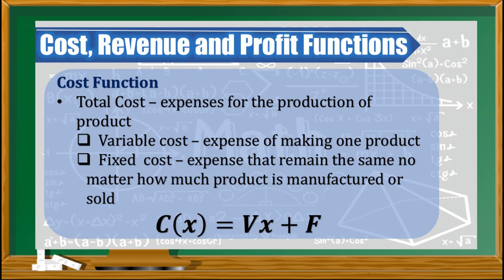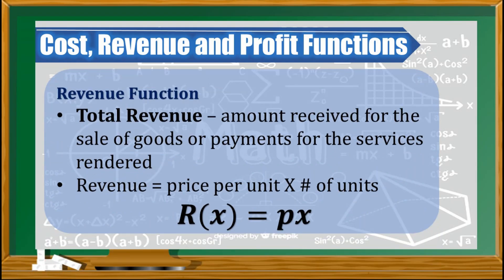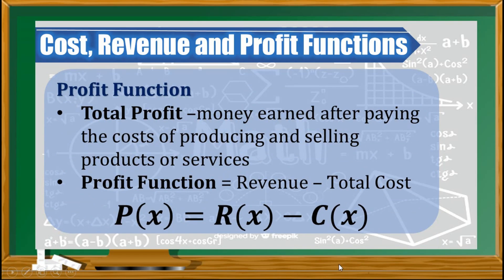The cost formula is: C(x) = variable cost × x + F, where x refers to the number of products and F is the fixed cost. For the revenue function, total revenue is the amount received for the sale of goods or payments for services rendered. Revenue is simply the price per unit times the number of units: R(x) = price × x. For the profit function, total profit is the money earned after paying the cost of producing and selling. It is given by: P(x) = R(x) − C(x).